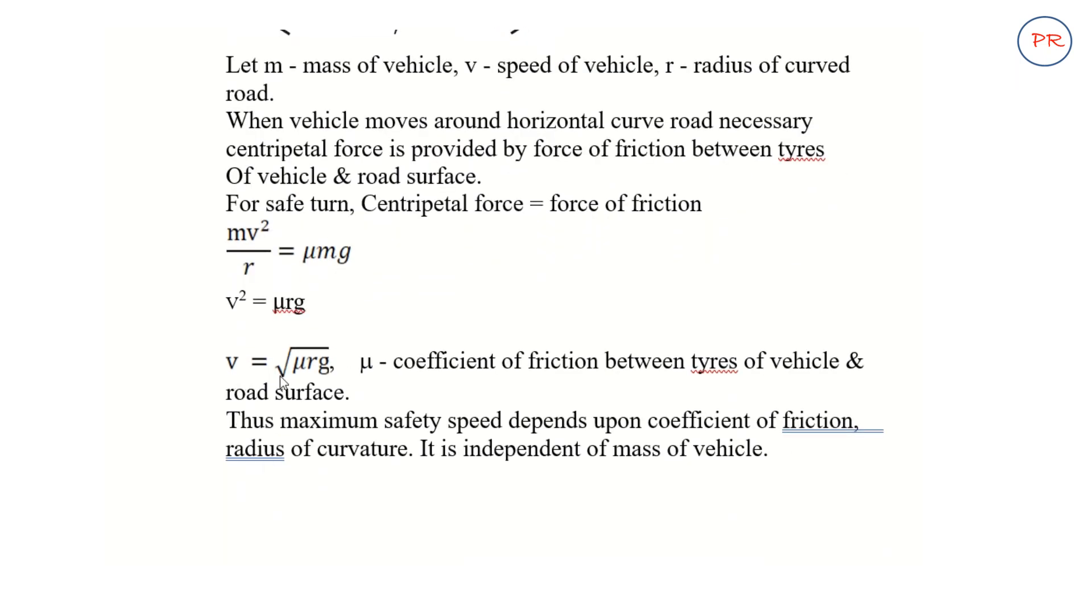we get v equals the square root of mu rg, where mu is the coefficient of friction between the tires and road surface. Thus, the maximum safety speed depends upon the coefficient of friction and radius of curvature, and it is independent of the mass of the vehicle.